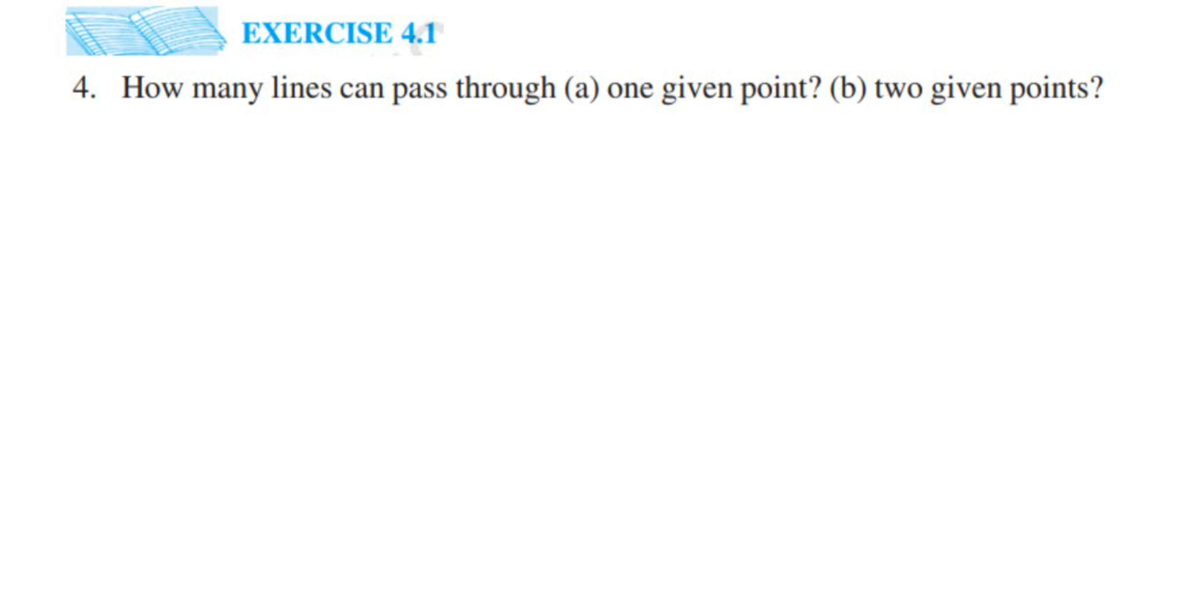Hey everyone, here's a question from exercise 4.1, chapter basic geometrical ideas of class 6. This is the fourth question. The question is: how many lines can pass through (a) one given point and (b) two given points? Now let us solve the first question. So suppose this is a point, let us take point A.